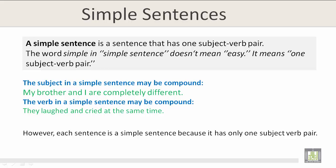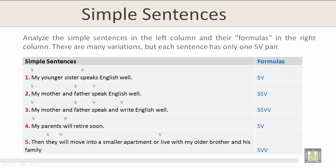The subject in a simple sentence may be compound. For example: 'My brother and I are completely different.' The verb in a simple sentence may also be compound, as in: 'They laughed and cried at the same time.' However, each sentence is a simple sentence because it has only one subject-verb pair. Analyze the simple sentences in the left column and their formulas in the right column. There are many variations, but each sentence has only one subject-verb pair.